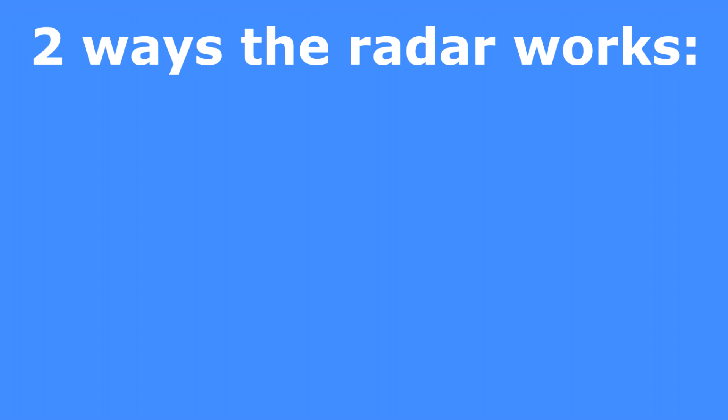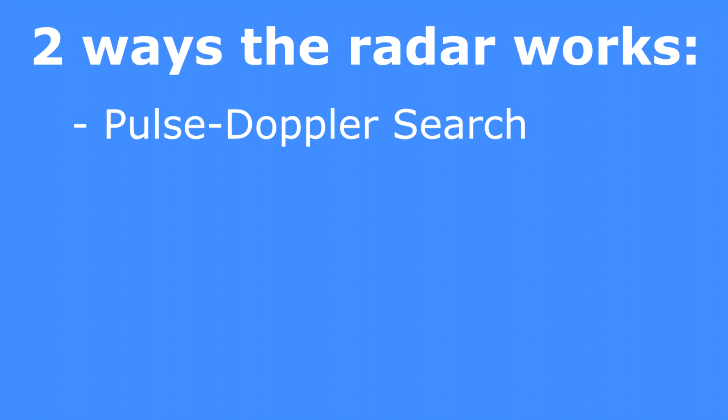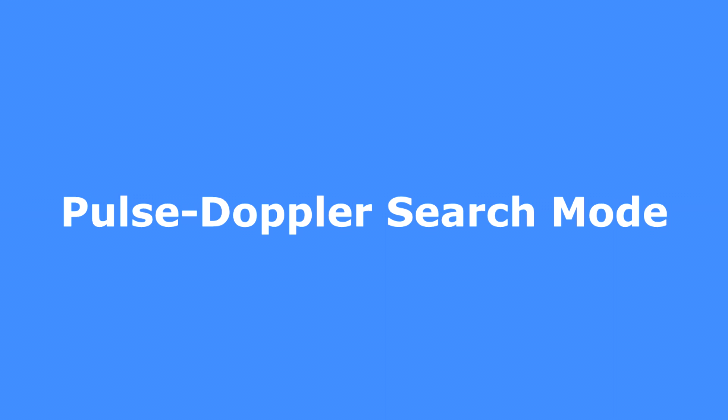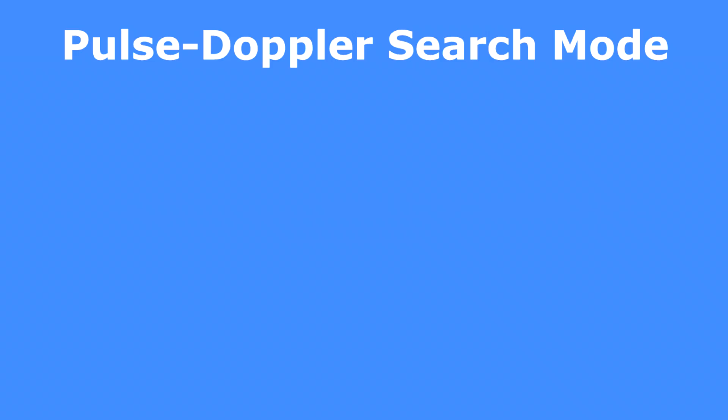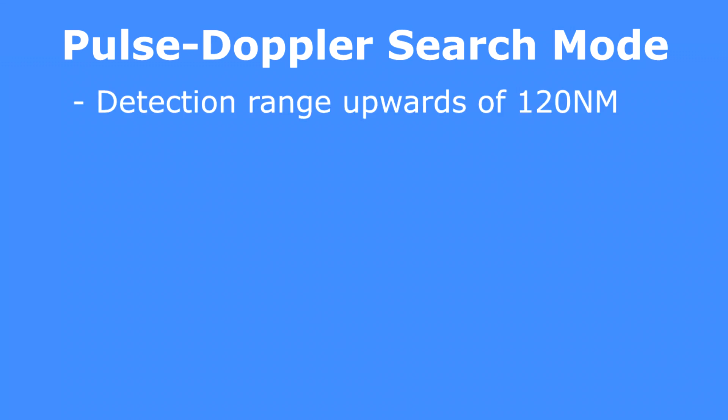First off, let's talk about the two ways the AUG-9 transmits and receives radar information: Pulse Doppler search and pulse search modes. The first and primary method the AUG-9 uses is called Pulse Doppler mode. This is the most common method of search and track that radars use to acquire accurate and stable data for radar contacts. In the Tomcat, Pulse Doppler will allow you to see radar contacts at ranges of up to 120 miles or more, and has the longest range of any search mode.